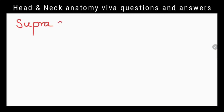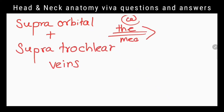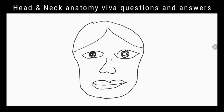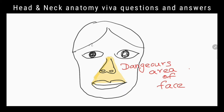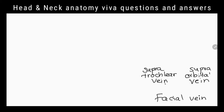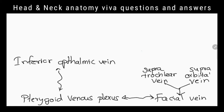How is the facial vein formed? By the union of supraorbital and supratrochlear veins at the medial angle of the eye. What is the dangerous area of the face? The area bounded by corners of the mouth and the bridge of the nose, including the nose and maxilla. How can infection of this area spread to the cavernous sinus? Superficial infections can spread through superior and inferior ophthalmic veins, which connect the facial vein to the cavernous sinus.